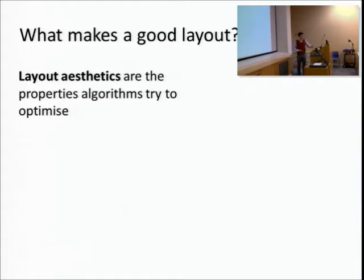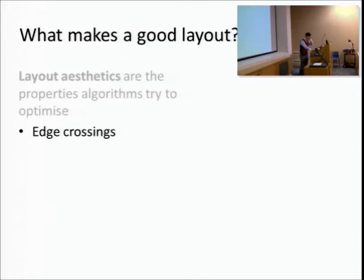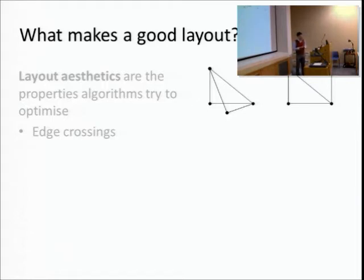Layout is usually generated automatically by an algorithm. The algorithm doesn't have a subjective opinion of how beautiful the layout is, so it uses certain measurable metrics - called graph drawing aesthetics - to evaluate whether it's doing a good job. The algorithm tries to optimize these aesthetics, hopefully producing a good drawing. One example is edge crossings - two simple graphs where one has crossings and one doesn't. In general, edge crossings are considered bad for visualization, so algorithms try to reduce them.